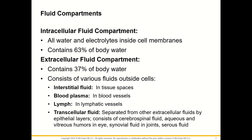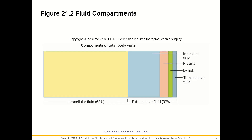Interstitial fluid is found in tissue spaces, blood plasma is found in blood vessels, lymph is found in lymphatic vessels, and transcellular fluid is separated from other extracellular fluids by epithelial layers. It consists of cerebrospinal fluid, aqueous and vitreous humors in the eye, synovial fluid in the joints, and serous fluid. Transcellular fluid is not usually grouped with interstitial fluid, blood plasma, and lymph, but it is a very important watery environment.